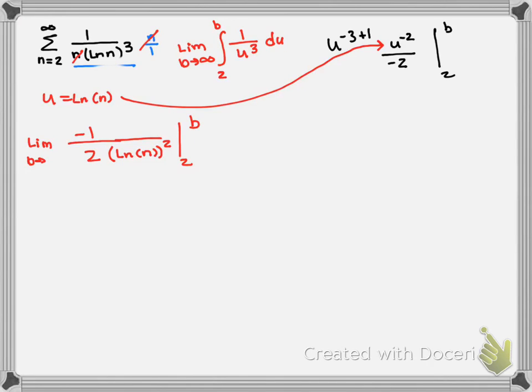When I put a very big number in here and square it, the first term is going to go to 0 minus a negative 1 over 2 ln of 2 all squared.